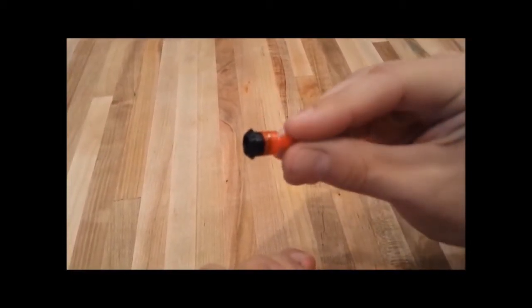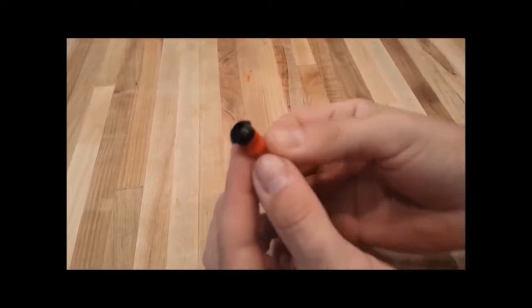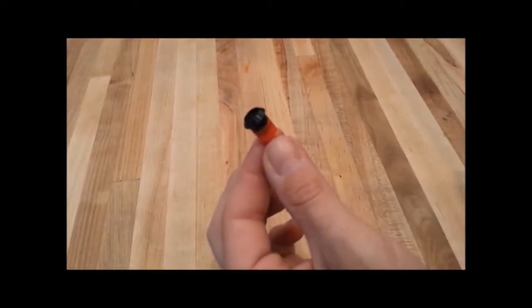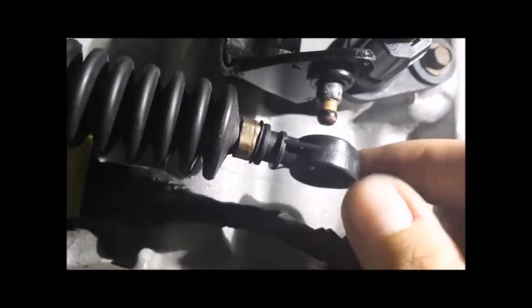After you remove all of the old bushing, if there's any left from the transmission cable, it should look like this.